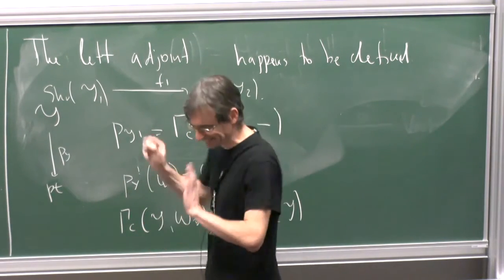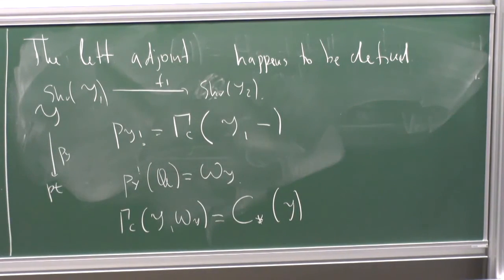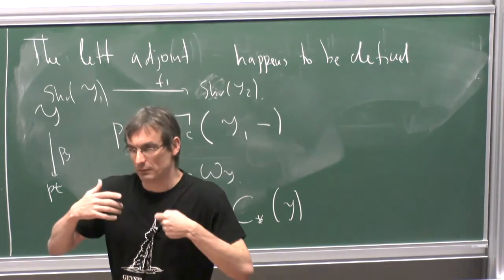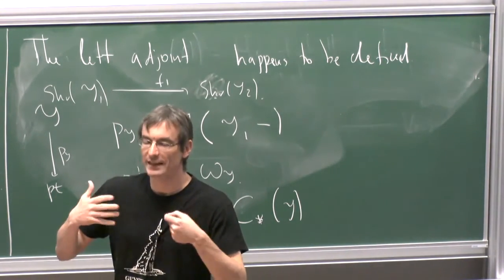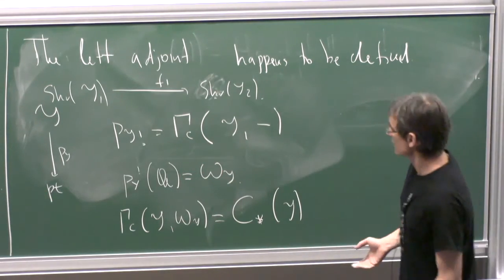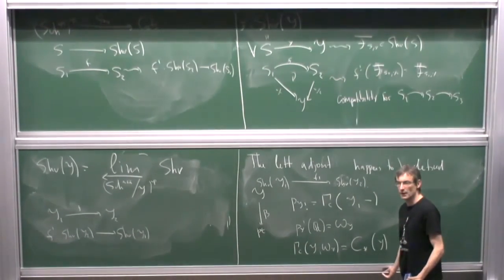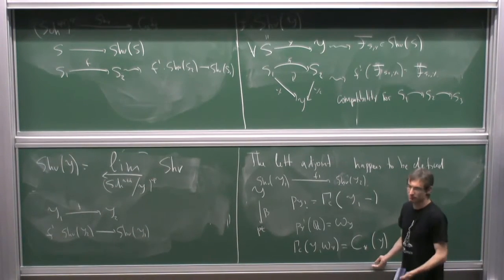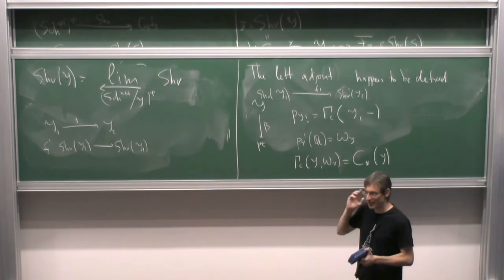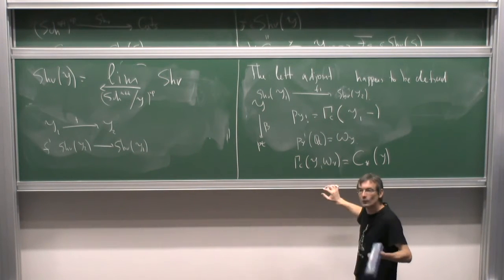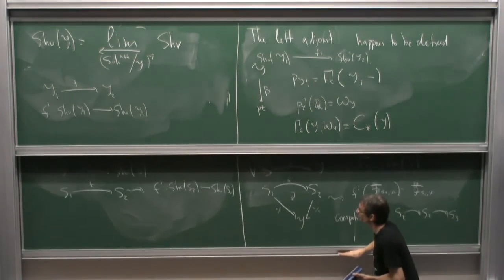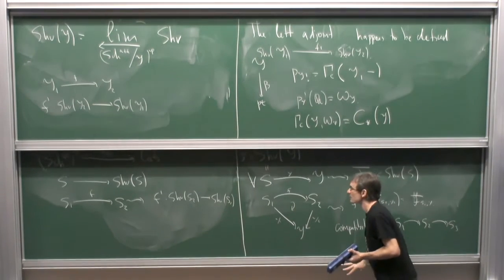Someone notes this resembles rational homotopy theory — computing homotopy types of mapping spaces from a 1-dimensional space to a highly connected space. Yes, that's essentially what we do, except in algebraic geometry. In algebraic geometry, this specific construction works when X is a curve and the target is BG; it doesn't generalize straightforwardly to surfaces because convergence fails in higher dimensions.